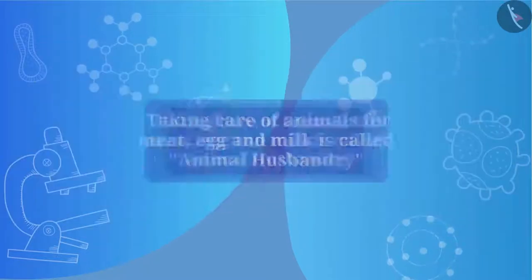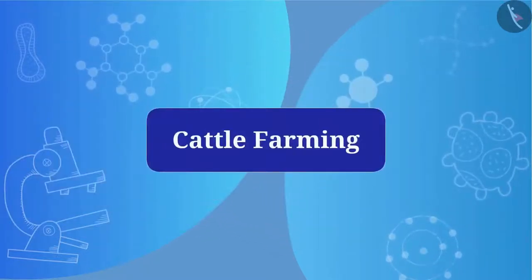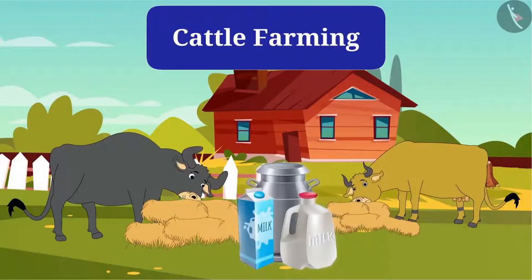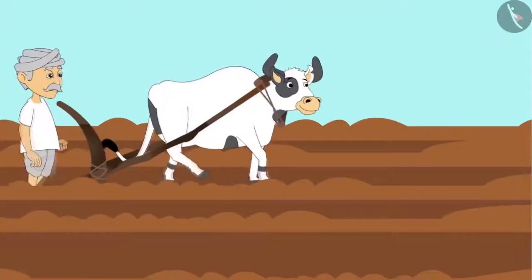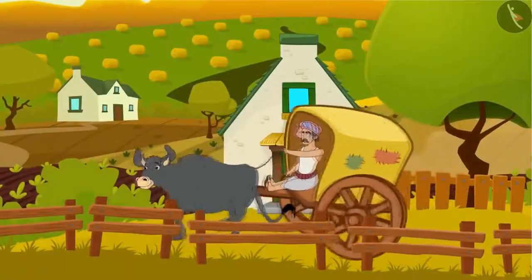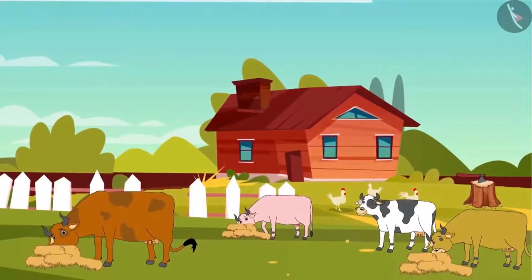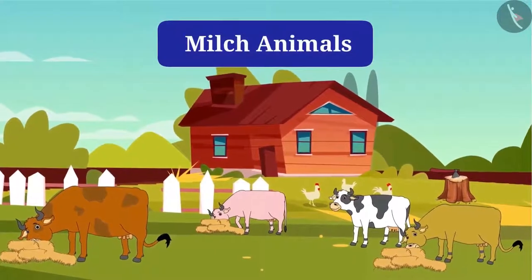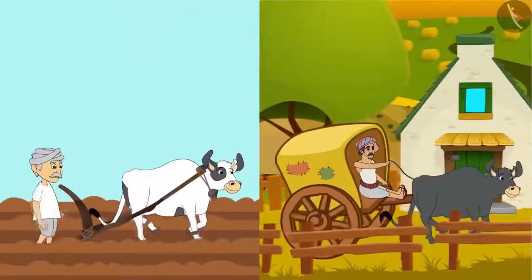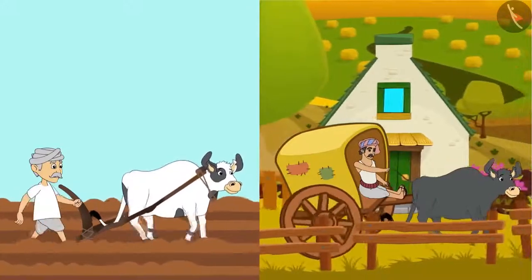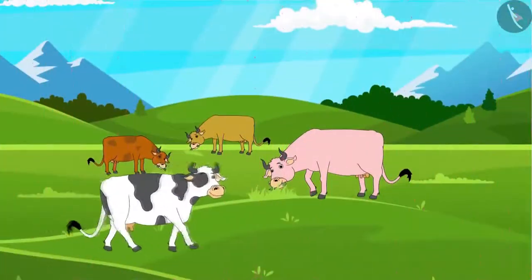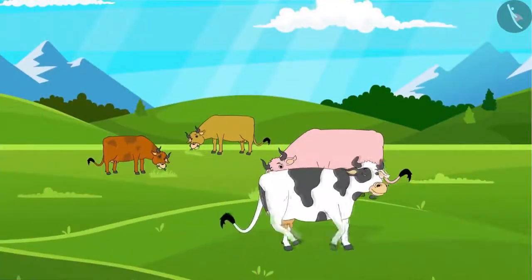Let's know about animal husbandry in detail. First, cattle farming. What do we get from animals like cows and buffalos? We get milk from them. They also help in plowing of fields and transportation. The female milking animals are called milch animals, and animals that are used for transportation and tillage are called draft animals.